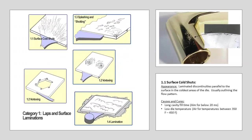In this example, a plated zinc die cast door lever had what appeared to be a surface defect. Although the defect looked like a cold shut, the casting was plated, so there were still questions whether the defect was occurring on the zinc substrate or related to the plating process. The casting was sectioned, mounted in plastic, and polished to a smooth surface. Microscopic examination showed the defect to clearly be in the zinc substrate and was clearly a surface cold shut. The cause of the defect was found to be related to a combination of low die temperature and flow.